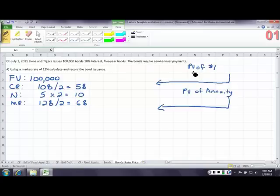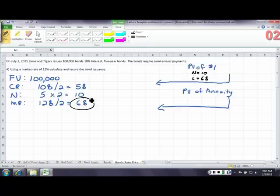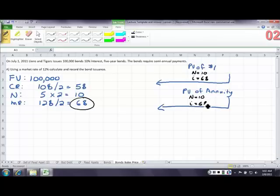On the present value of a dollar table, we're gonna look up an N of 10 and an I of 6. We use 6% because the price of the bond is determined by the market. We do the same thing with the present value of the annuity table, but we're going to use a different table. So if you look on the table, you should get a present value of a dollar of .5584, and the present value of an annuity of 7.3601.